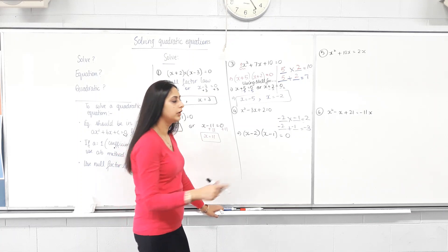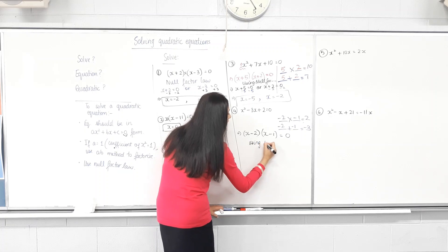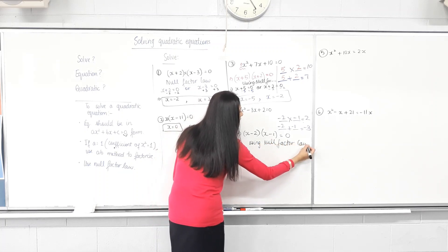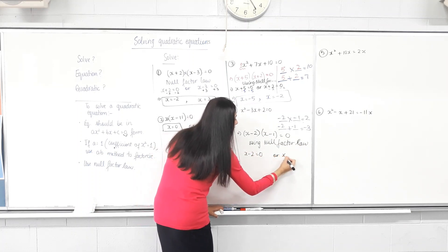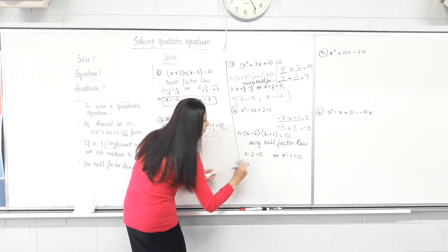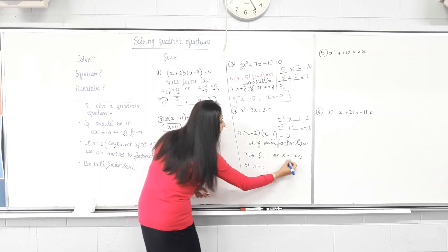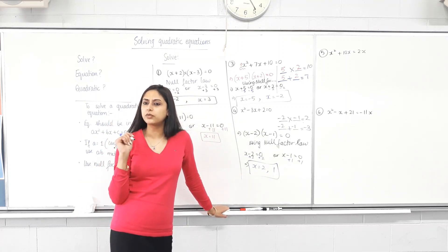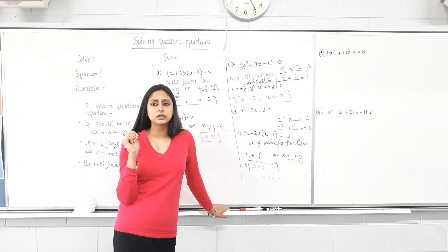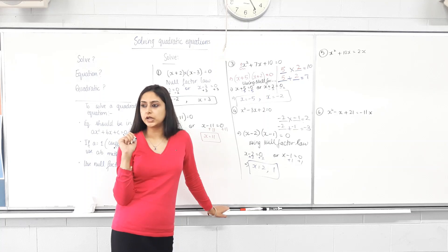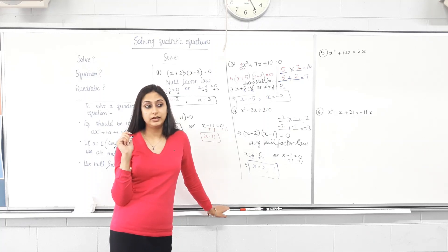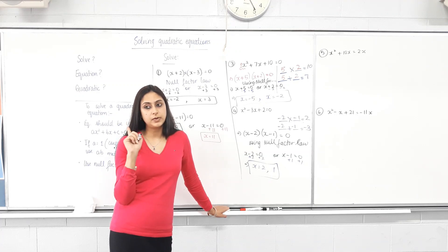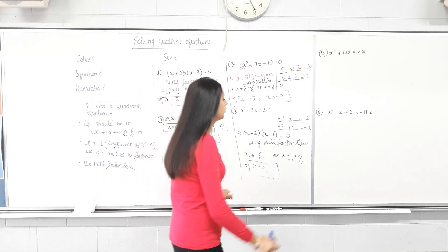Now move on to null factor law. Either x minus 2 equals 0 — add 2: x equals 2 — or x minus 1 equals 0 — add 1: x equals 1. So 2 and 1 are the two answers. See how many answers we're getting for a quadratic? Two. Will a quadratic always have two answers? What's the highest power of x in a linear equation? 1 — and we got 1 answer. What's the highest power here? 2 — and we're getting 2 answers. Is it related? When we get to graphs I'll talk about it in more detail.